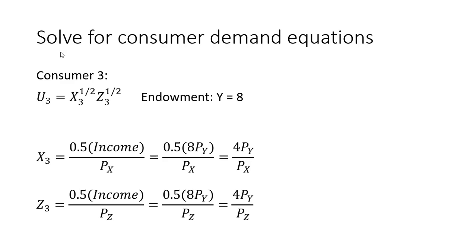For consumer three, this consumer will spend half his income on good x. The consumer's income is 8 times the price of good y, and simplifying, we get the demand for good x. For good z, the demand for good z for consumer three is similarly derived.